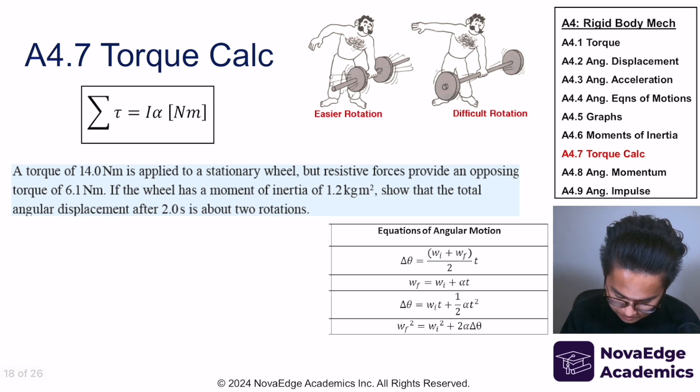Let's do another one. We know the net torque is equal to 14 minus 6.1, which is 7.9 Newton meter. So angular acceleration is equal to torque divided by I, which is equal to 6.58 rad per second squared.